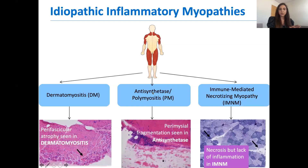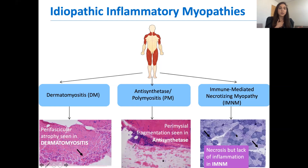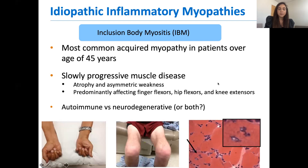Clinically, many of these myositis subtypes — dermatomyositis, antisynthetase, necrotizing myopathy, and polymyositis — actually all look very similar with proximal muscle weakness affecting the shoulder girdles and hip girdle muscles. But when they started doing muscle biopsies, they realized these subtypes have different features and the causes or triggers may be different. Fast-forwarding to 2020, this has become important because we're now starting to think about treating these subtypes differently, which we'll discuss towards the end of the hour.